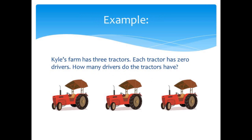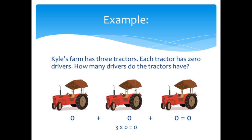For example, Kyle's farm has three tractors. Each tractor has zero drivers. How many drivers do the tractors have? Well, each tractor has zero drivers, so that's the same thing as saying zero plus zero plus zero, which equals zero. So three times zero equals zero.